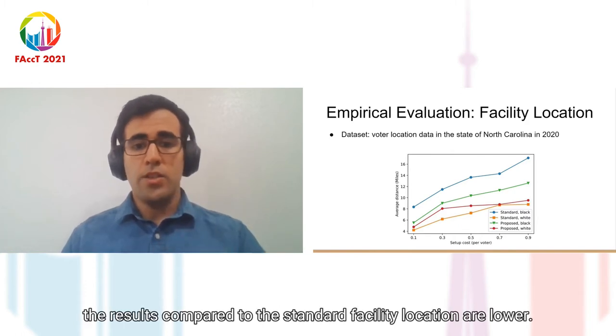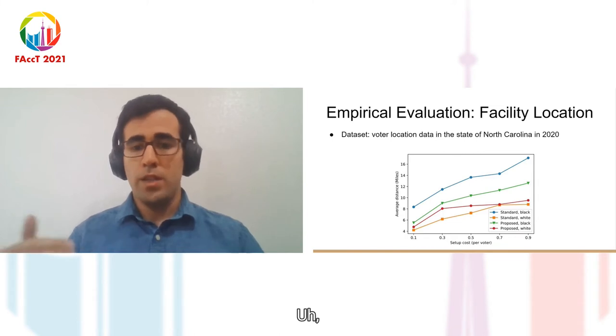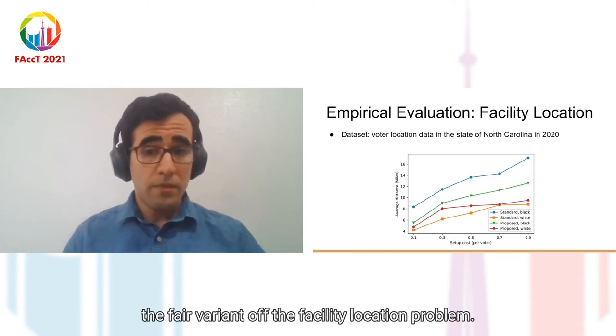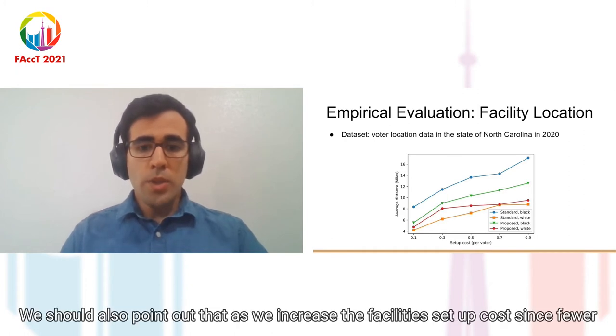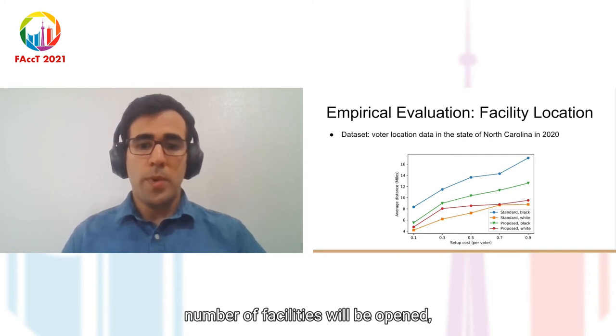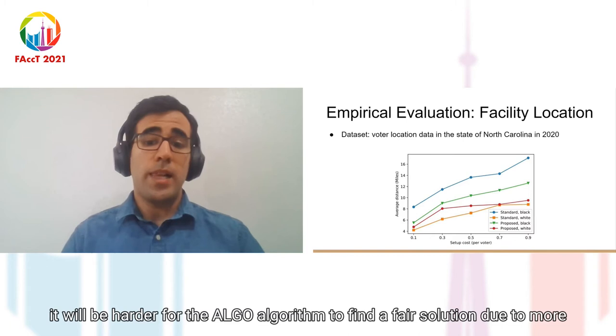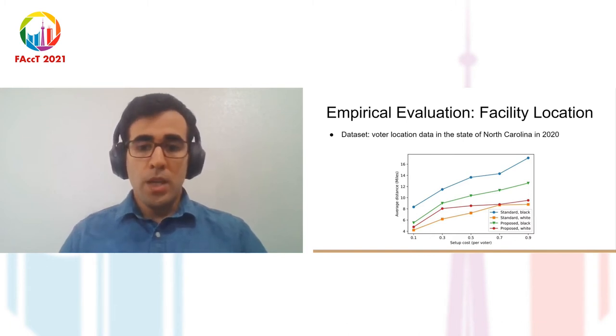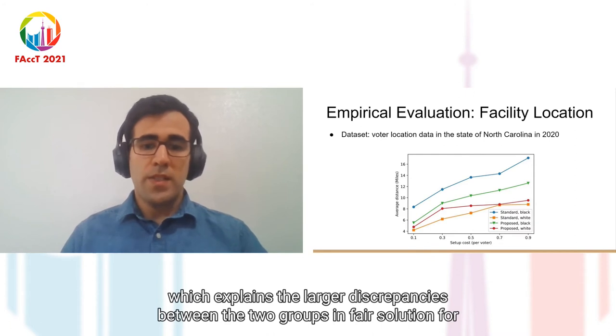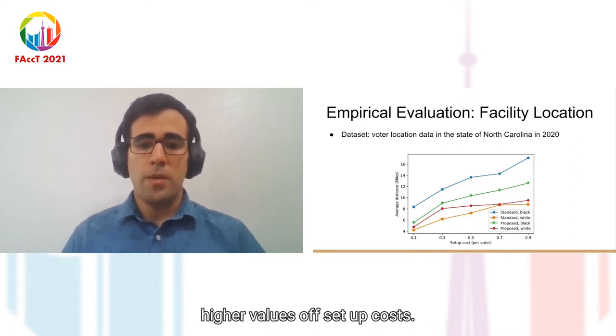Here we present the result of this experiment for different values of facility setup cost. The results show that a fair facility location algorithm lowers the average distance to polling locations for the worse of group, namely black voters. Basically, the results compared to the standard facility location are lowered in the fair variant of the facility location problem. We should also point out that as we increase the facility setup cost, since fewer number of facilities will be opened, it will be harder for the algorithm to find a fair solution due to more restriction, which explains the larger discrepancies between the two groups in fair solution for higher values of setup cost.